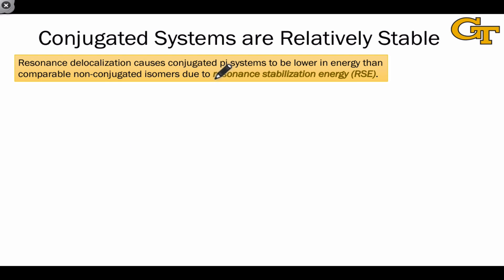We refer to the energy difference between a conjugated system and a related non-conjugated molecule as its resonance stabilization energy. It's the energy lowering that occurs due to the presence of many resonance structures and electron delocalization within the conjugated molecule. One way to measure resonance stabilization energy is to compare the heat of hydrogenation of two isomers, one of which is conjugated and one of which is not.